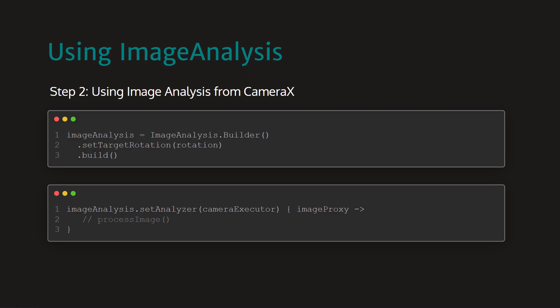First, we will create an image analysis object. And then we will set the analyzer using the setAnalyzer function. Inside the trailing lambda of this function, we will get the image proxy that we can process to read barcodes from the image.